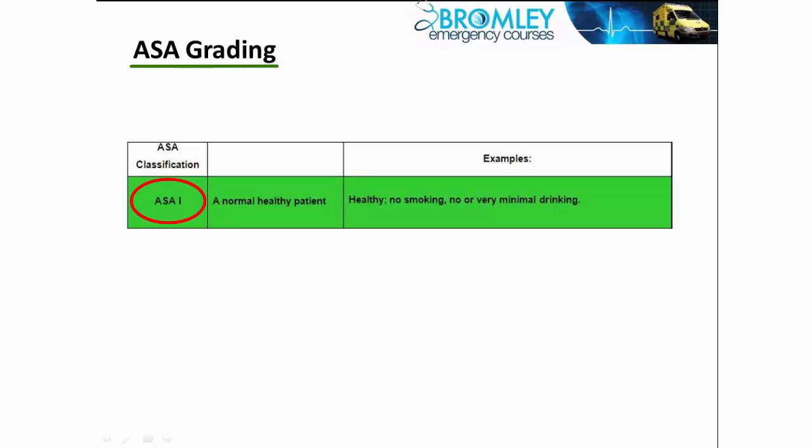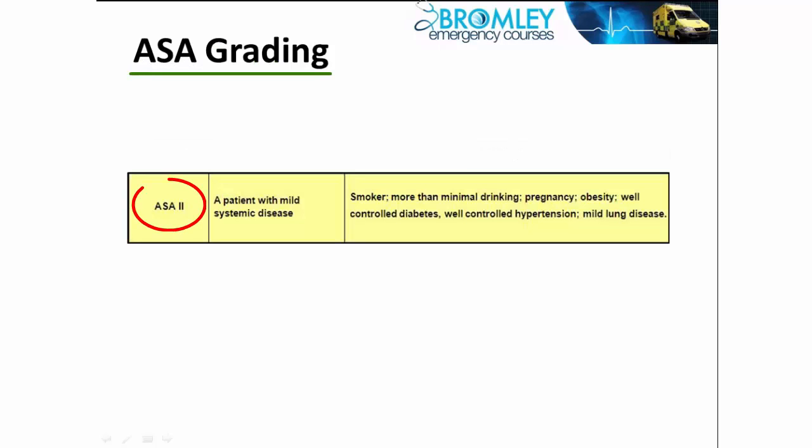ASA grade 1 is a healthy normal person — that includes not smoking and minimal drinking. ASA 2 is defined as mild systemic disease: a healthy person who smokes, or has pregnancy, obesity, good diabetes, mild hypertension, or mild asthma. Those two categories are generally seen as fairly low risk and straightforward anaesthetics.